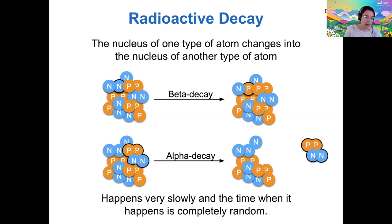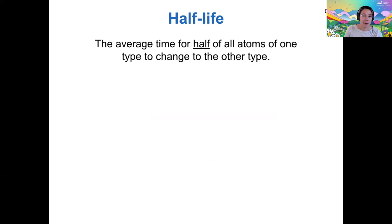And we call the measurement of how fast radioactive decay happens the half-life of a radioactive atom. So the half-life is the average time it takes for half of the atoms in a sample to change to the next type, and all radioactive atoms or elements decay from one type to a specific other element and then to a specific other element.